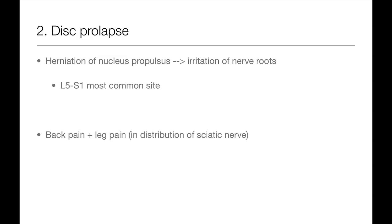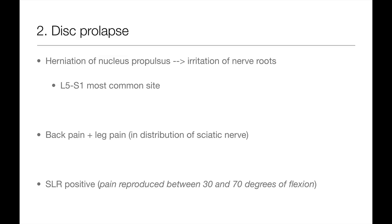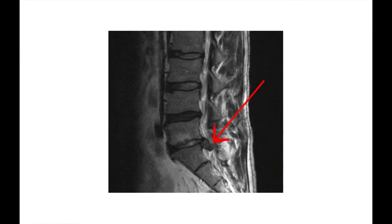If the patient doesn't have any red flags, the chances are that the herniated nucleus pulposus is simply irritating one of the nerve roots making up the sciatic nerve. As a result, the patient will probably have pain in the distribution of the sciatic nerve — along the back of the thigh and down the back of the calf — and on examination the straight leg raising test is usually positive. Most patients with a disc prolapse are diagnosed clinically, but if you want to confirm the diagnosis radiologically, you'll need to do an MRI of the spine.